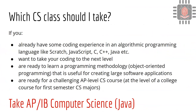If you already have some coding experience in an algorithmic programming language — maybe you've taken AP Computer Science Principles, or you have experience in a language like Scratch, Snap, C, C++, JavaScript, or Java — and you want to take your coding to the next level, then I would recommend taking AP IB Computer Science in Java. If you're ready to learn object-oriented programming for creating large software applications, or you're ready for a challenging AP-level course at the level of a first-semester college course for CS majors, this is the class for you.